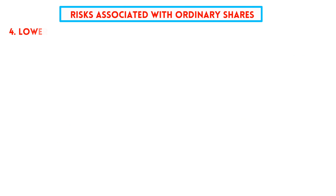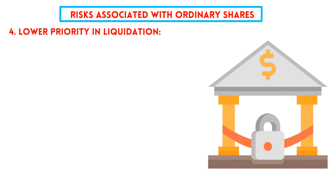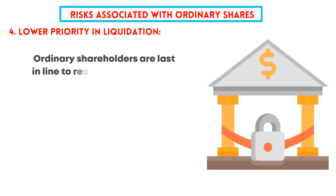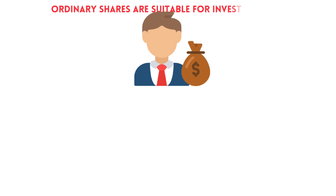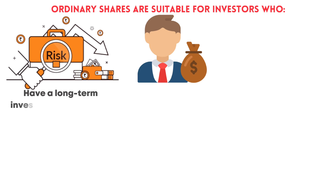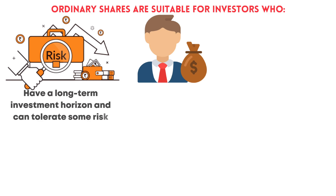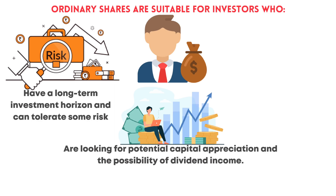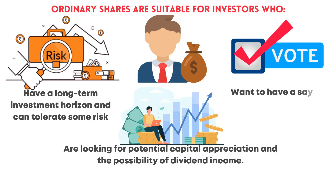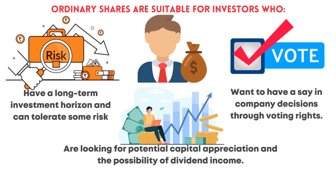Fourth, lower priority in liquidation: in the unfortunate event of a company liquidation, ordinary shareholders are last in line to receive any remaining assets after debts are paid and preference shareholders are compensated. Ordinary shares are suitable for investors who have a long-term investment horizon, can tolerate some risk, are looking for potential capital appreciation, dividend income, and want a say in company decisions through voting rights.